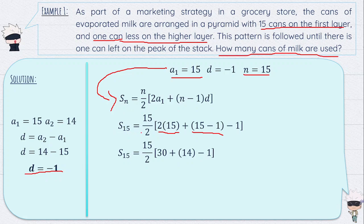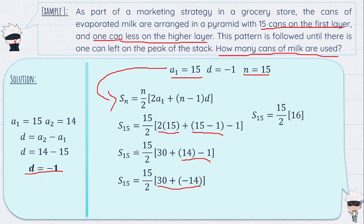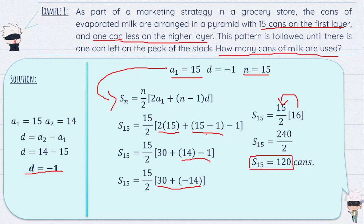Continuing the solution: S of 15 equals 15 divided by 2, times the quantity 30 plus negative 14, which is 16. So S of 15 equals 15 divided by 2 times 16. Multiplying 16 times 15 gives 240, then dividing by 2 gives S of 15 equals 120. Therefore, the number of cans used is 120.